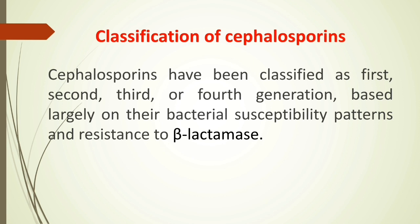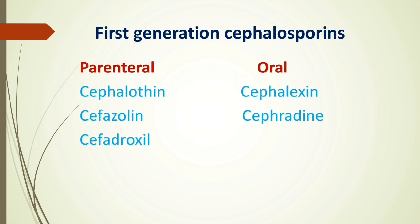Now let's see the classification of cephalosporins. Cephalosporins have been classified into first, second, third, fourth, and fifth generations, mainly based on their bacterial susceptibility patterns — that means their spectrum of activity against various gram-positive and gram-negative bacteria — and also based on their resistance to beta-lactamase enzyme. The fifth generation cephalosporins are a newer category with an extended spectrum of activity against both gram-positive and gram-negative organisms.